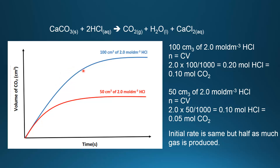We're going to compare the blue curve and the red curve. The blue curve was from reacting 100 cm³ of 2 mol/dm³ hydrochloric acid, and the red curve was produced by reacting 50 cm³ of 2 mol/dm³ hydrochloric acid. As you can see, the initial rate of reaction is the same for both curves. The difference is that the blue curve produces about twice as much gas as the red curve.